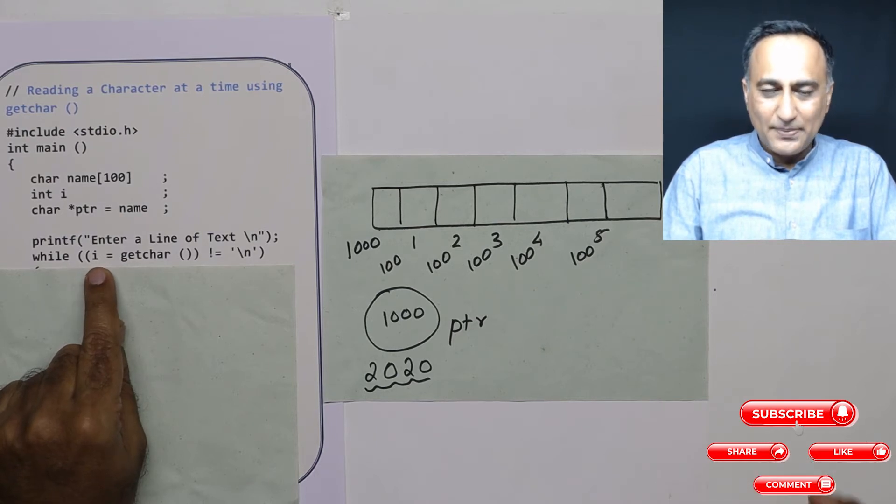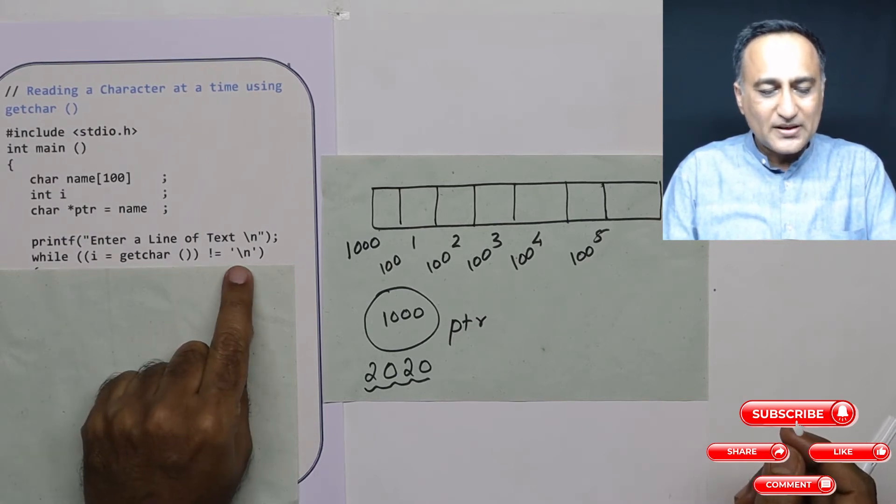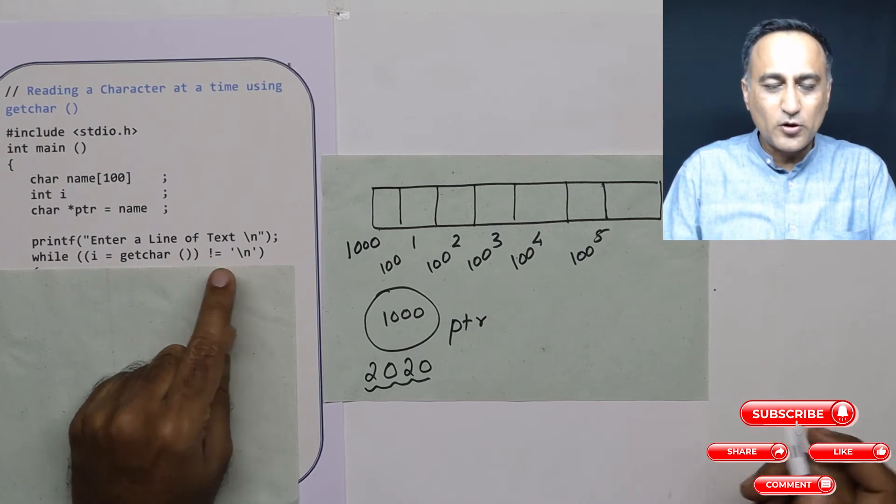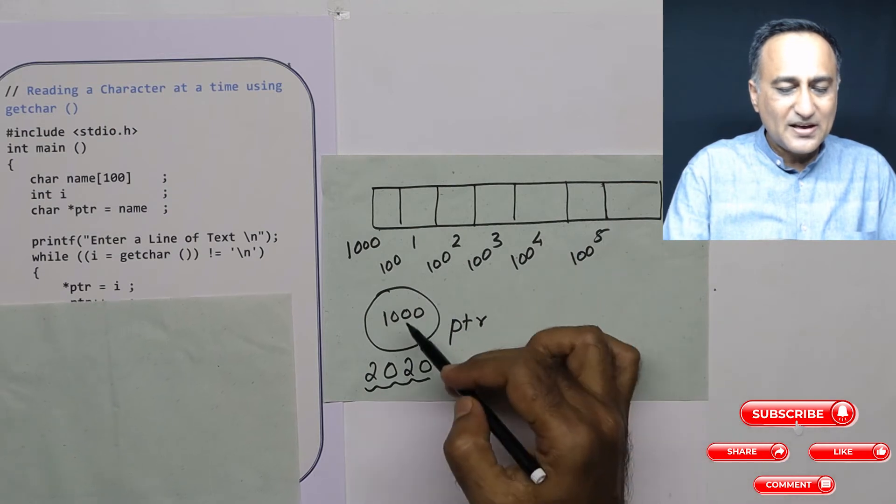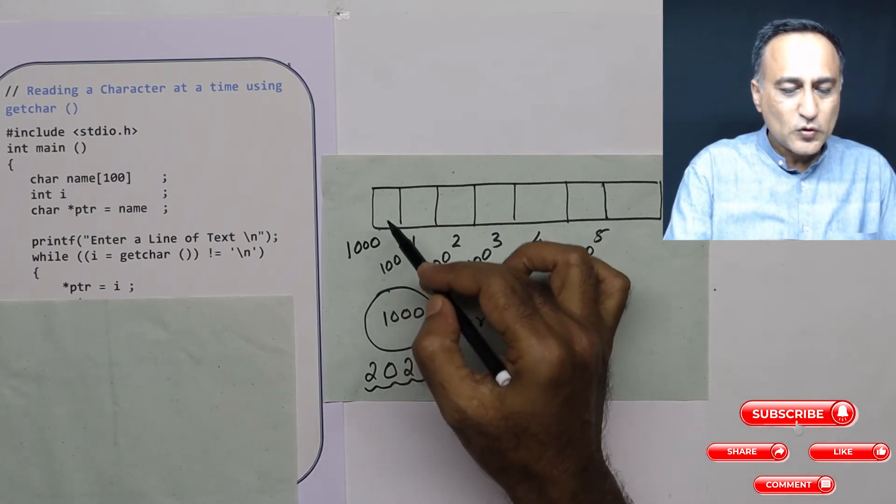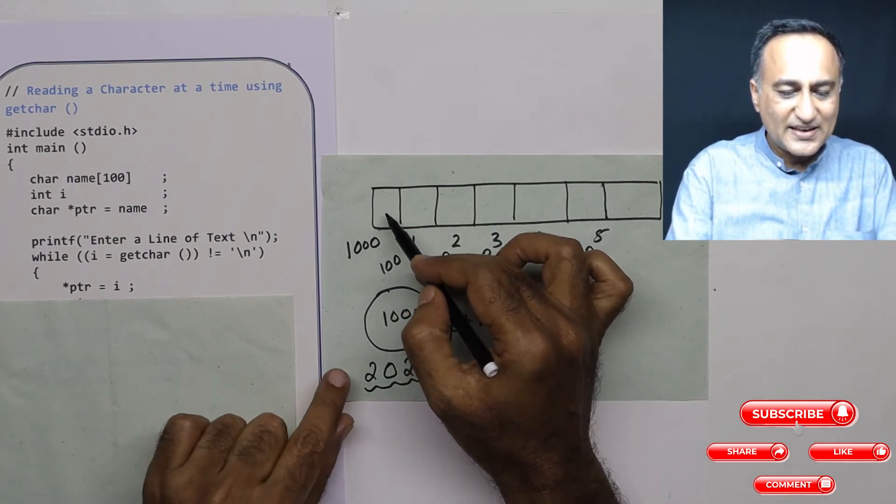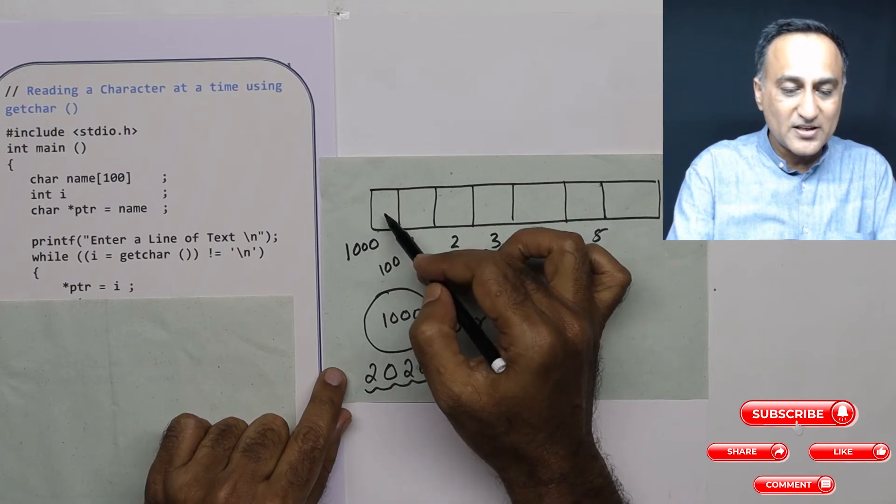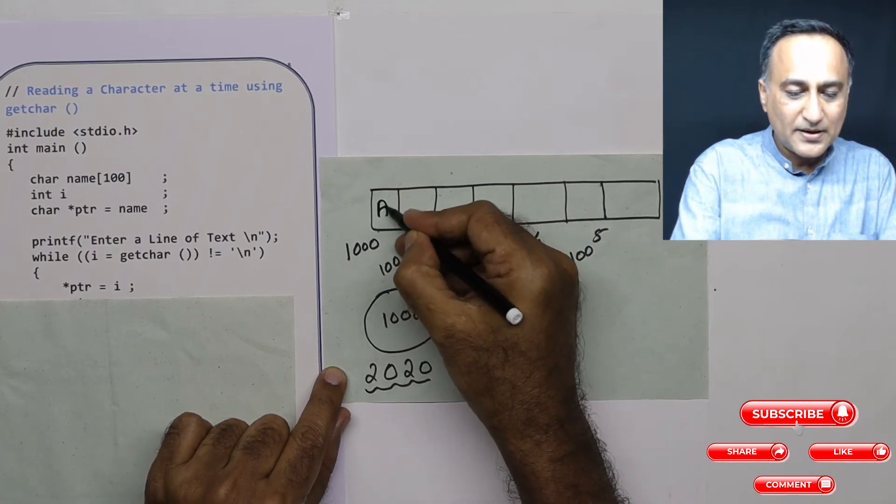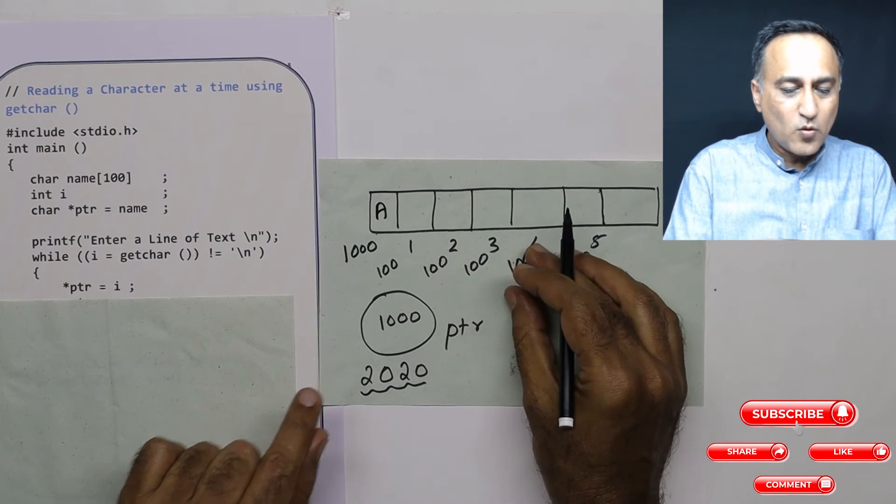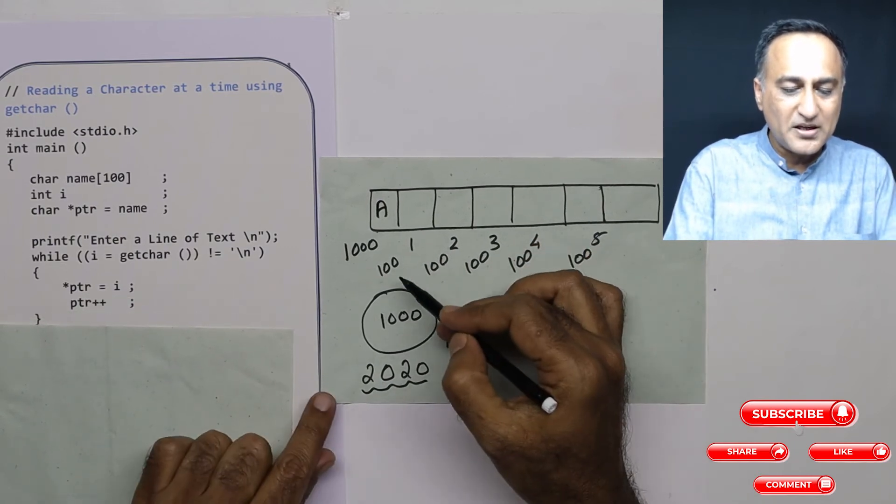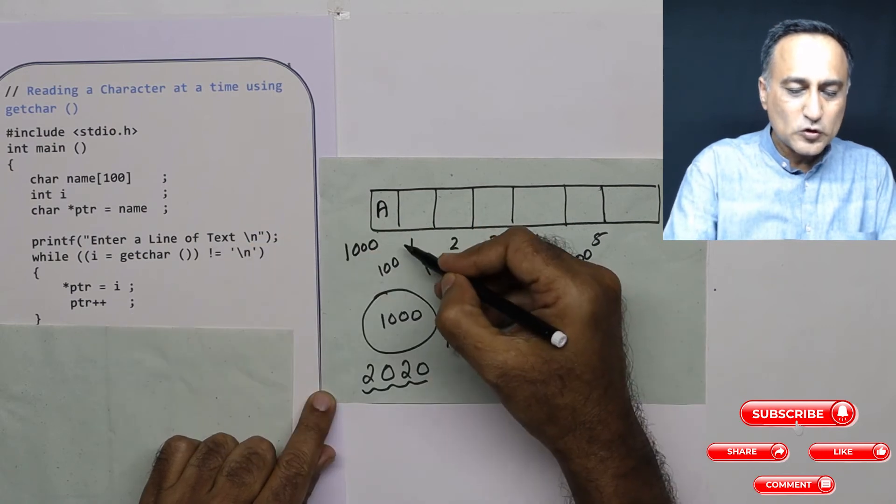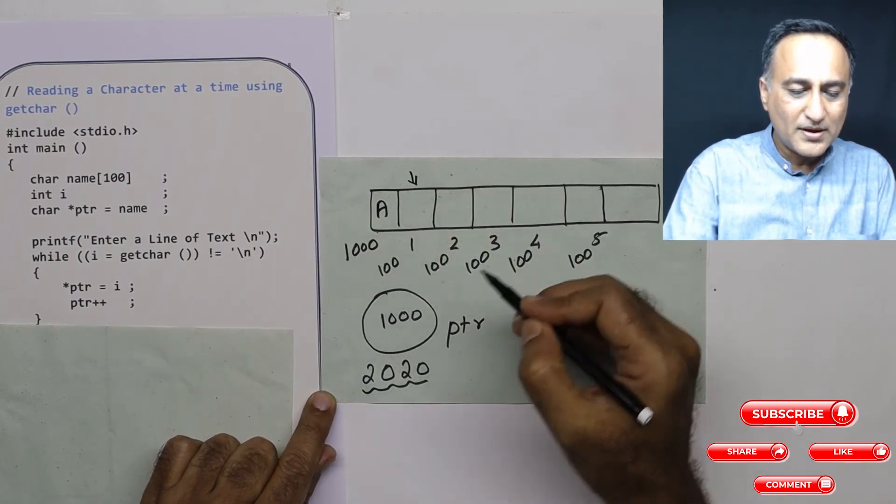Now A is going to be compared with backslash n. It is not equal to backslash n. So what is going to happen next is PTR is referring to 1000. Star indicates at that particular location, capital A is entered. Now I should increase PTR by one so that I go to the next location. PTR is increased by one and comes right here.